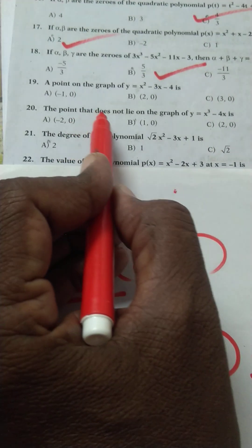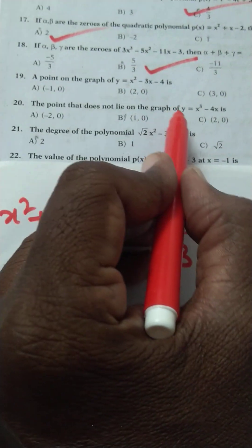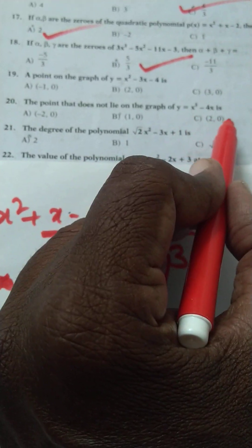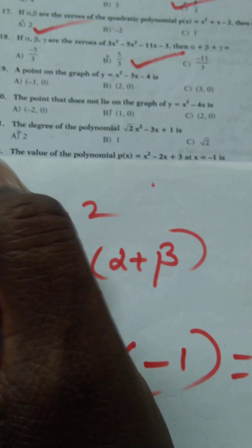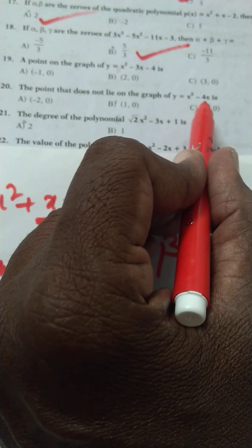The point that does not lie on the graph y = x³ − 4x: you have to factor that expression. The point (1, 0) is the right option.